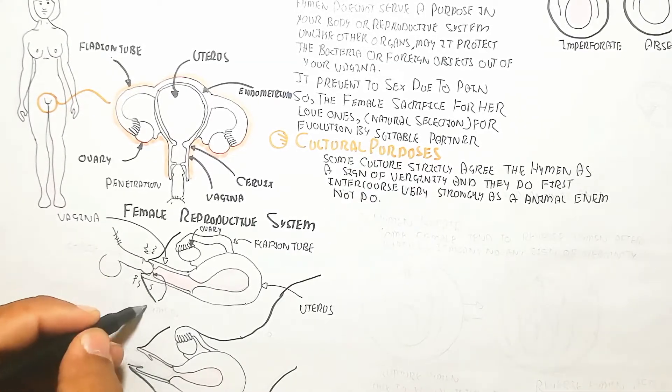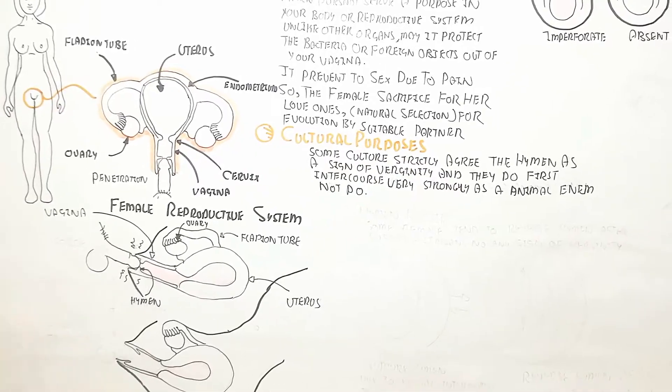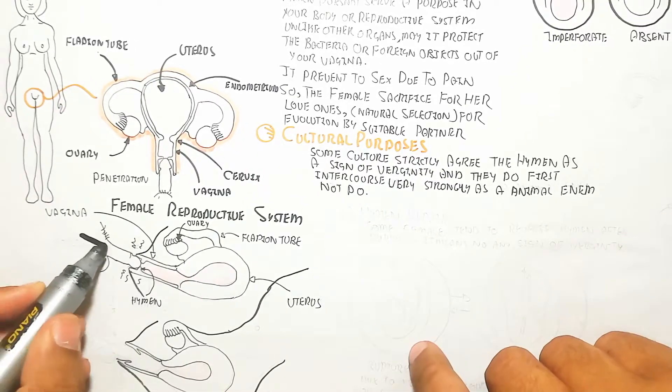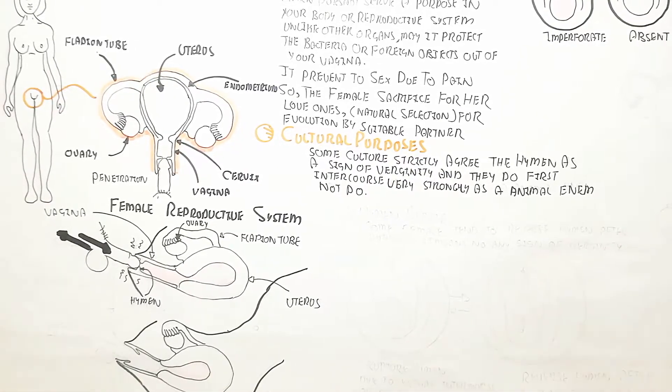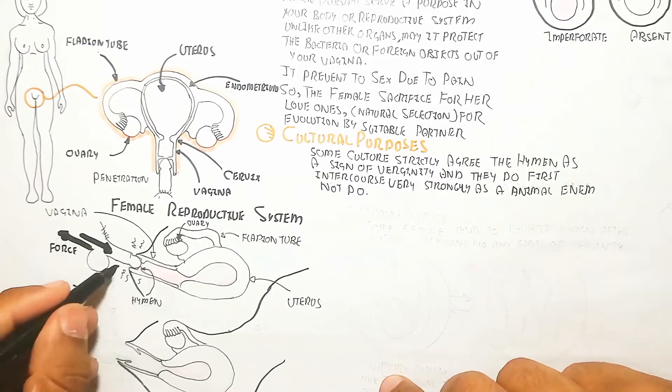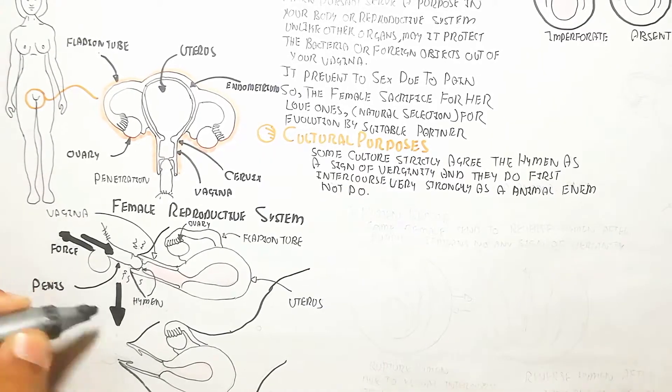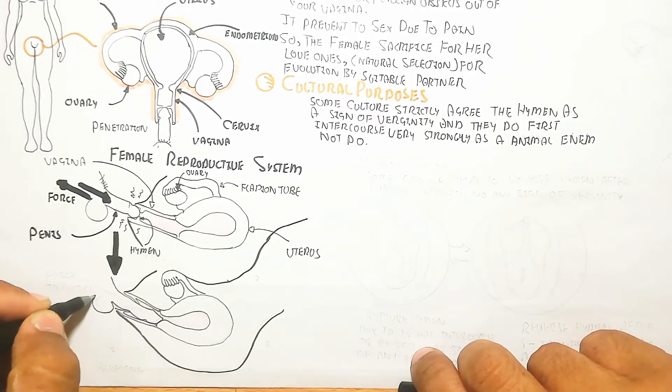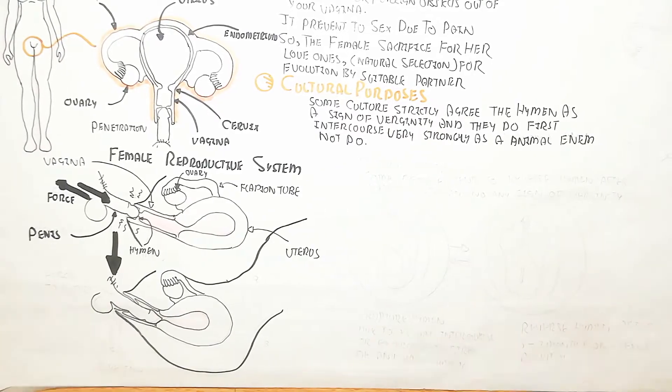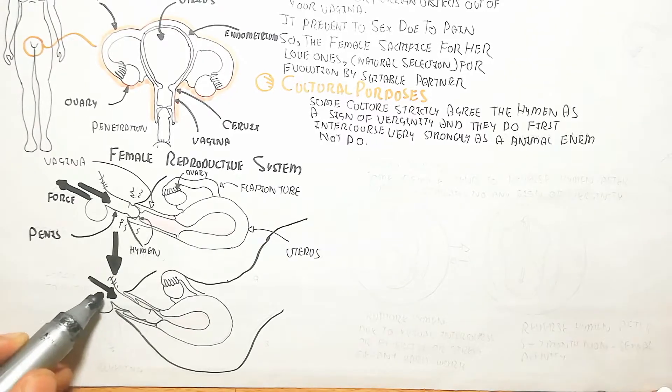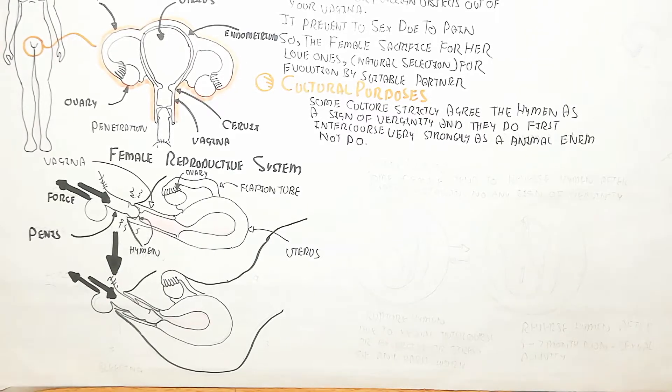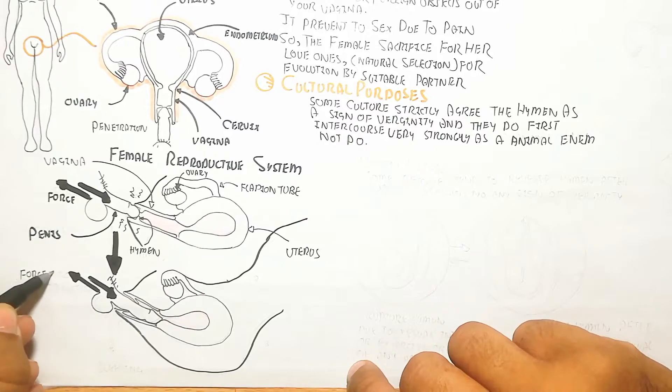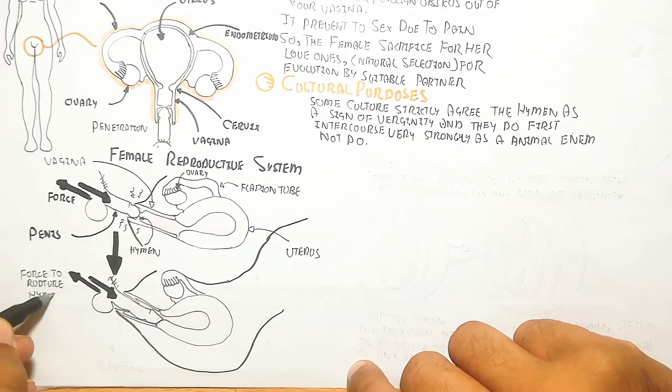Here is the sagittal view of sexual intercourse. The hymen is here, and you can see this force is required to rupture the hymen. After rupturing, the reddish outer surface of the vagina will show, and sometimes bleeding occurs.